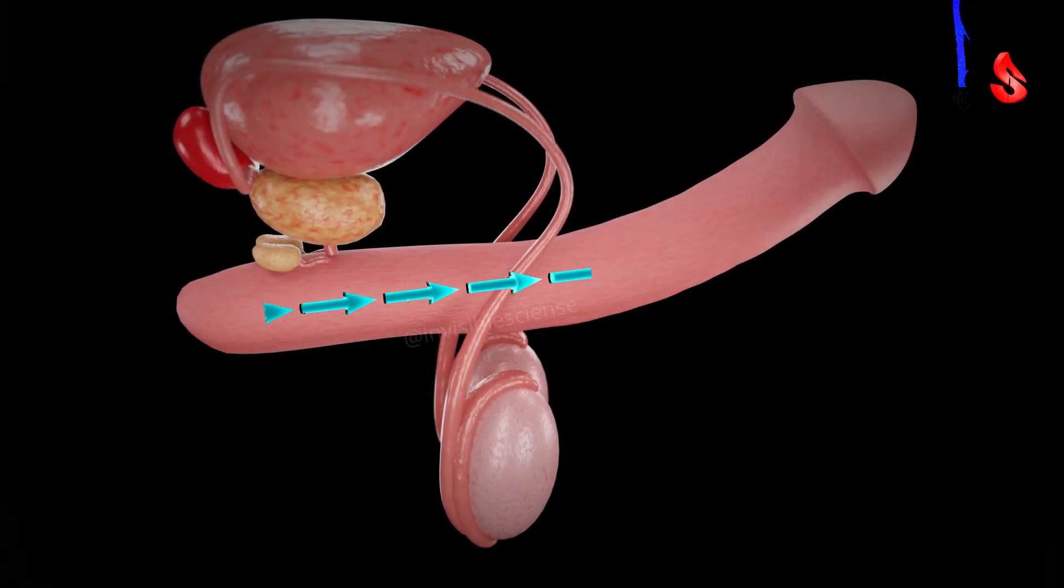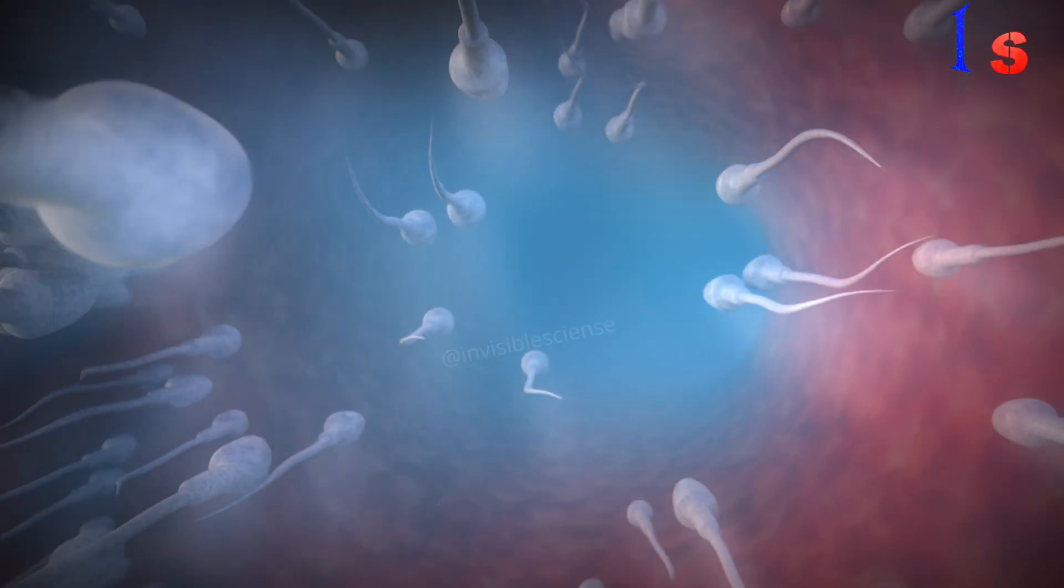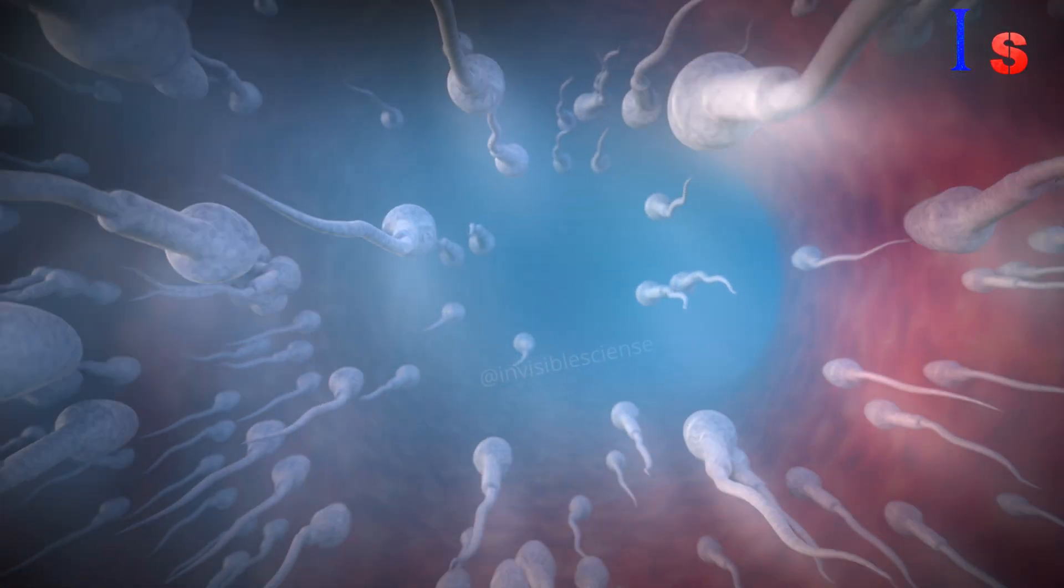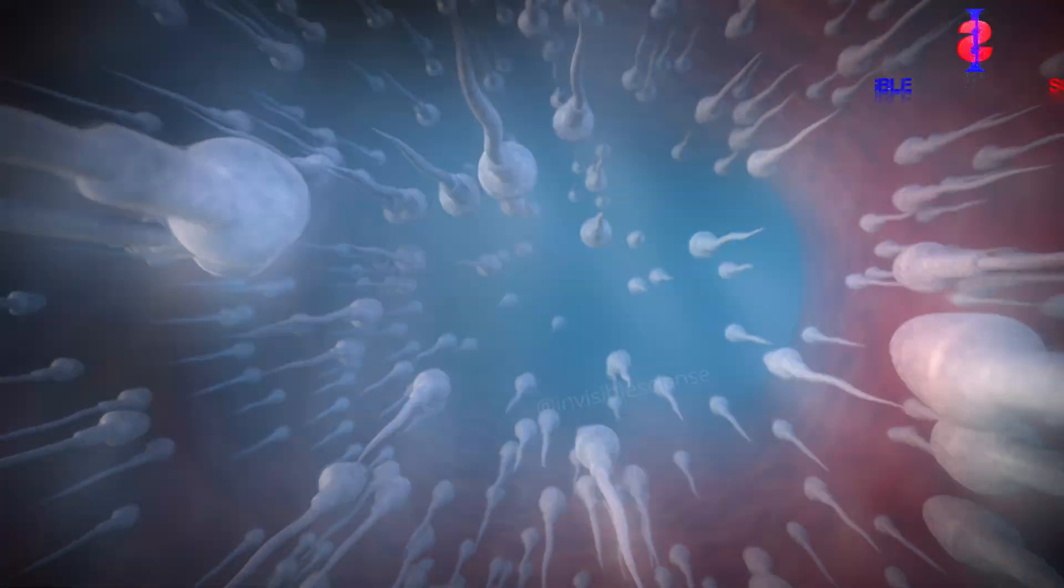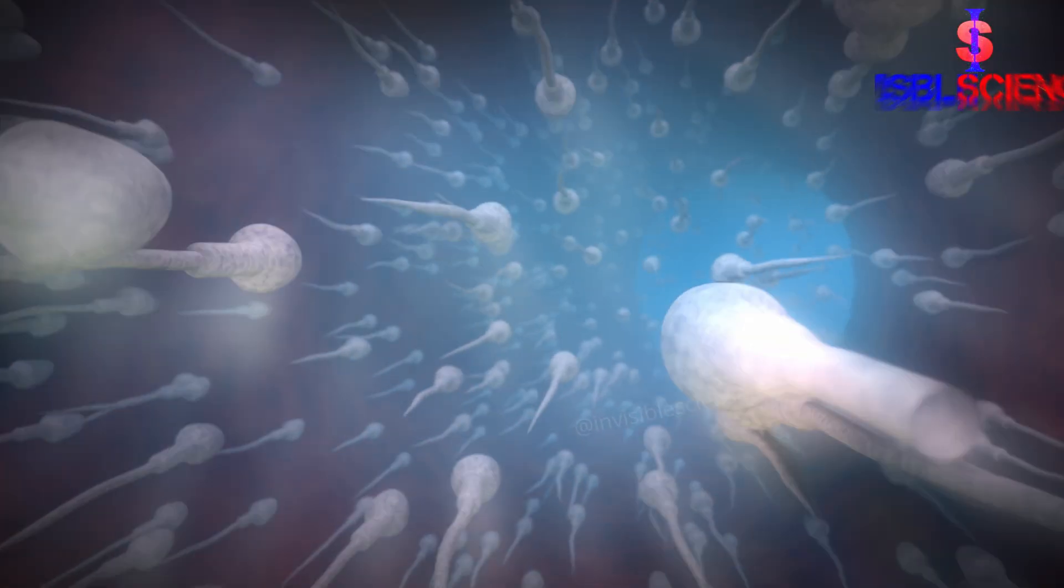Finally, the sperm cells enter the urethra, the tube that runs through the penis and leads to the outside of the body. During ejaculation, the muscles in the urethra contract, pushing the sperm cells out of the penis.